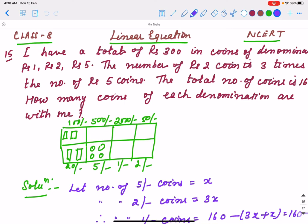Hello everyone, here is Class 8 linear equation, NCERT book question 15, a word problem. What is it? I have a total of rupees 300. Which types of denominations are there? 1 rupee note, 2 rupee note, and 5 rupee note. There are 3 types of notes.